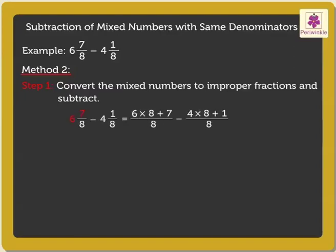6 and 7 upon 8 equals 6 times 8 plus 7 the whole upon 8. And 4 and 1 upon 8 equals 4 times 8 plus 1 the whole upon 8.